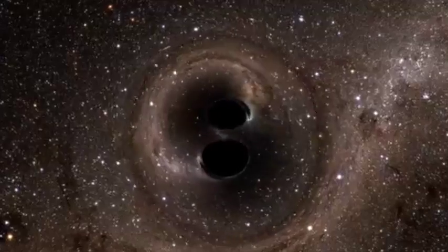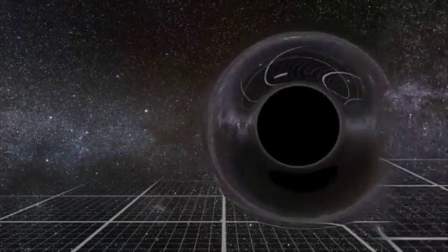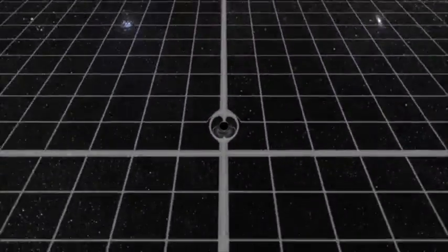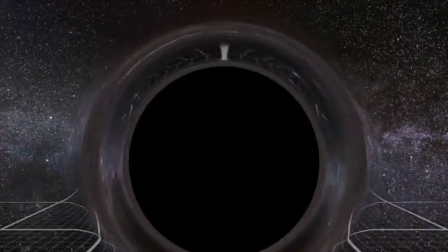Black holes come in all sizes. The size just depends on the mass of the star that turns into the black hole. But there's three main categories: stellar, intermediate, and supermassive black holes. Stellar being the smallest black holes, intermediate being in the middle, and supermassive being the largest.